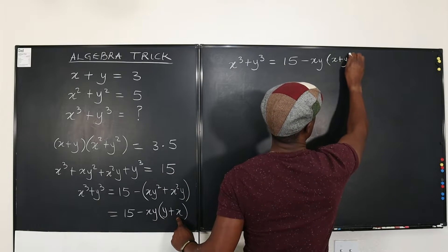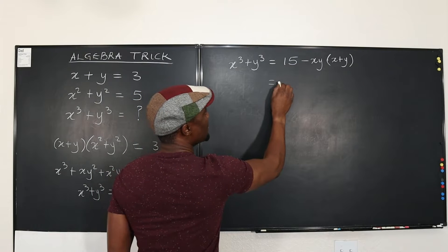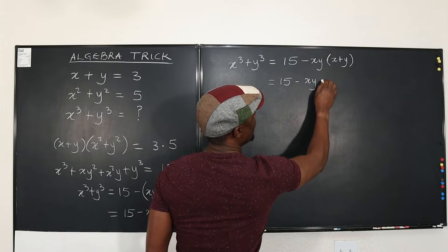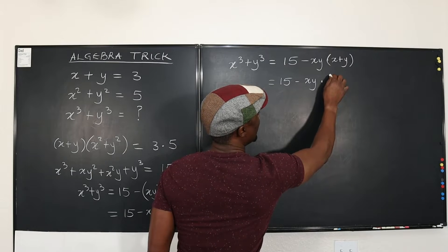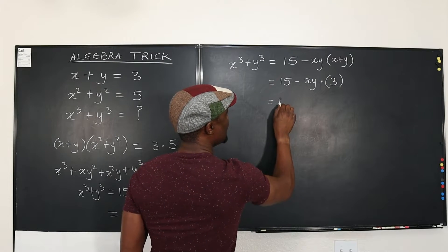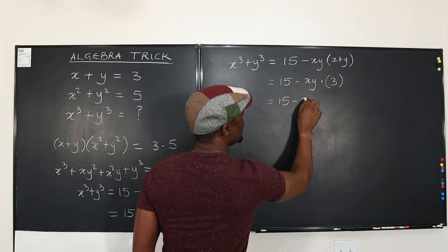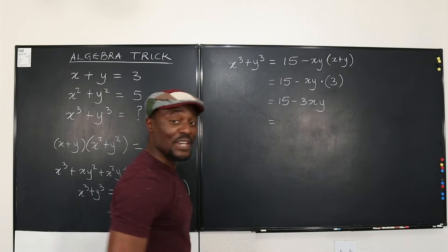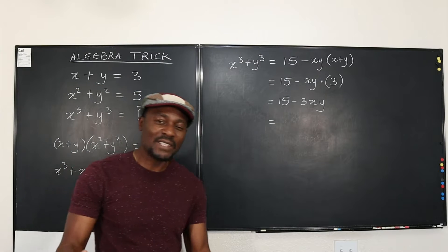X + Y. So let me rewrite this as X + Y. Okay, and this gives me 15 minus XY times three. Okay, well, that's 15 minus 3XY.